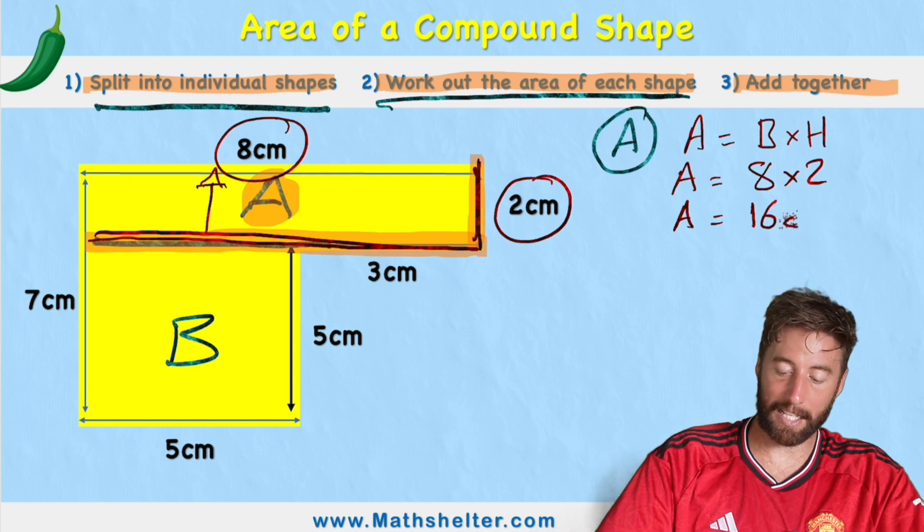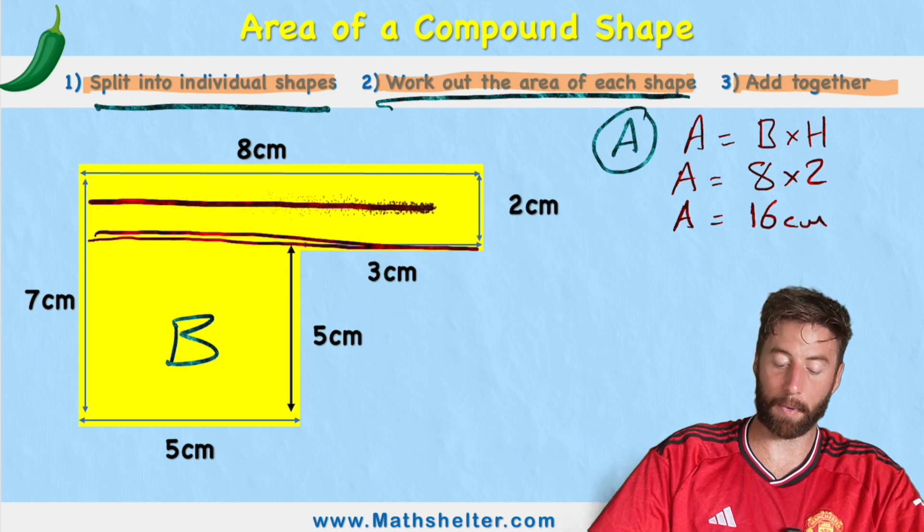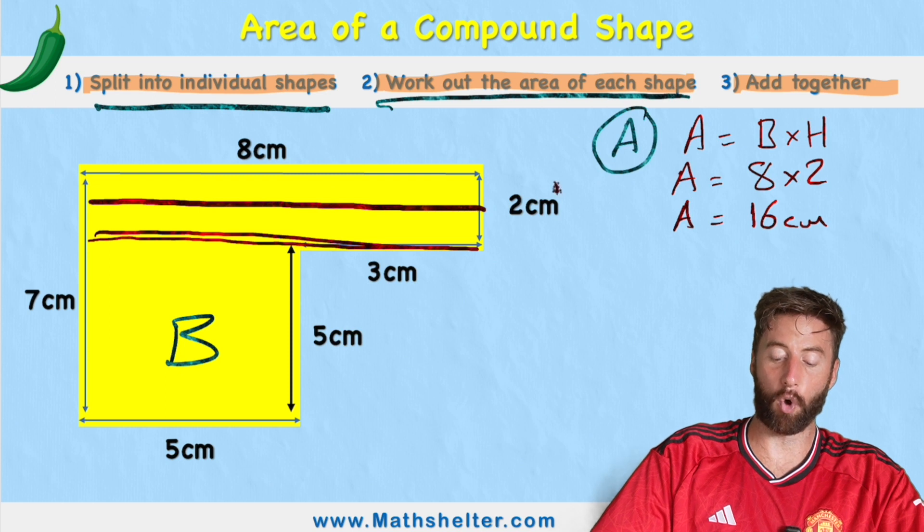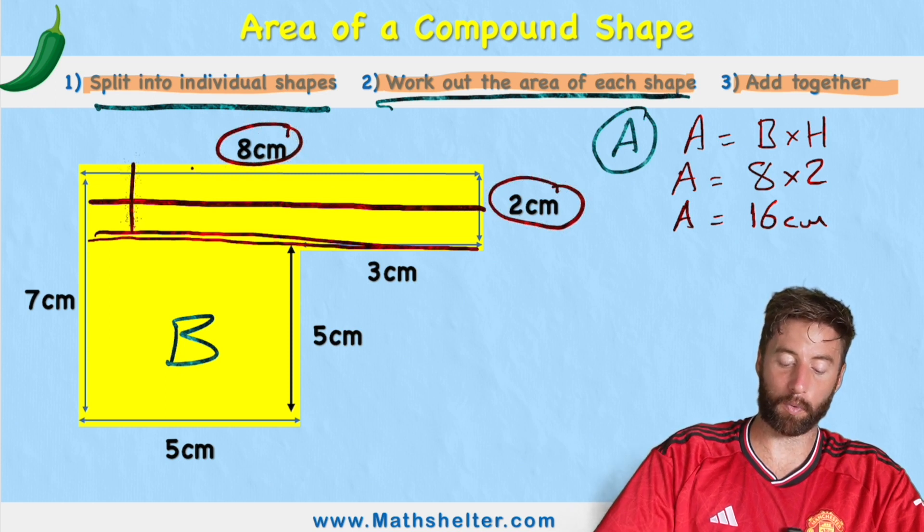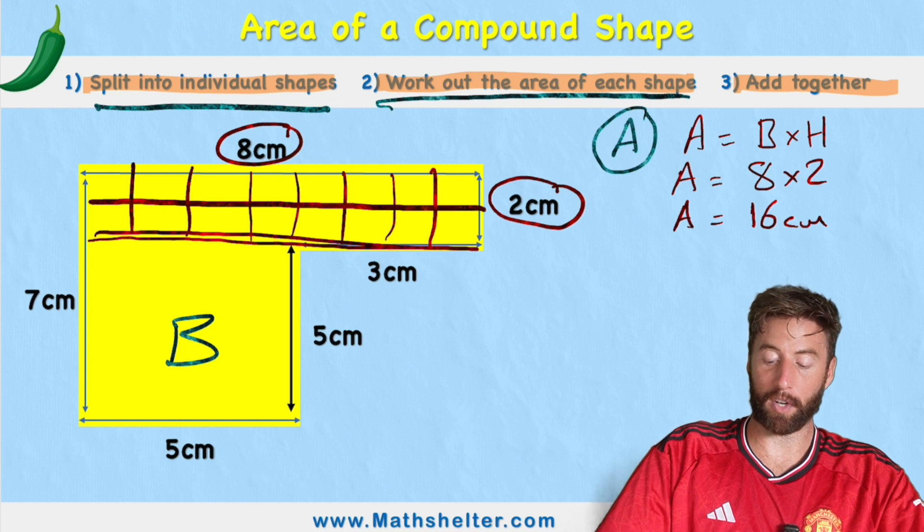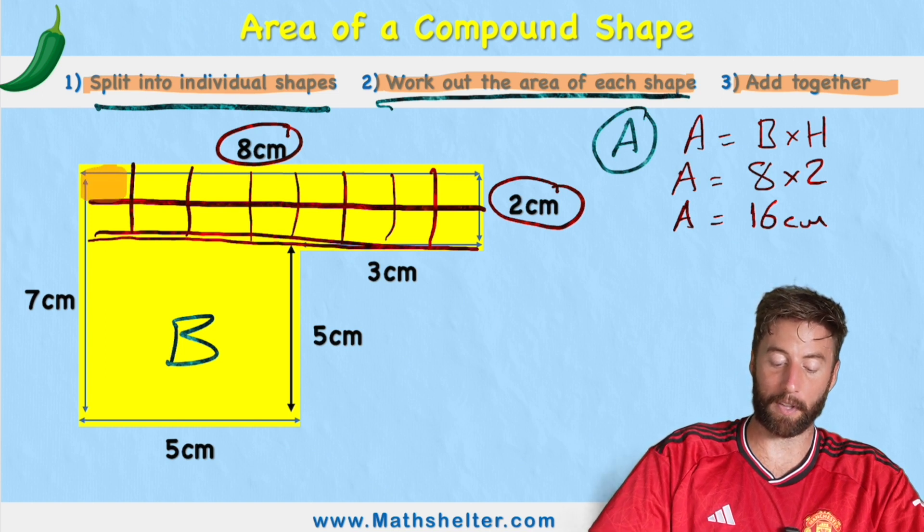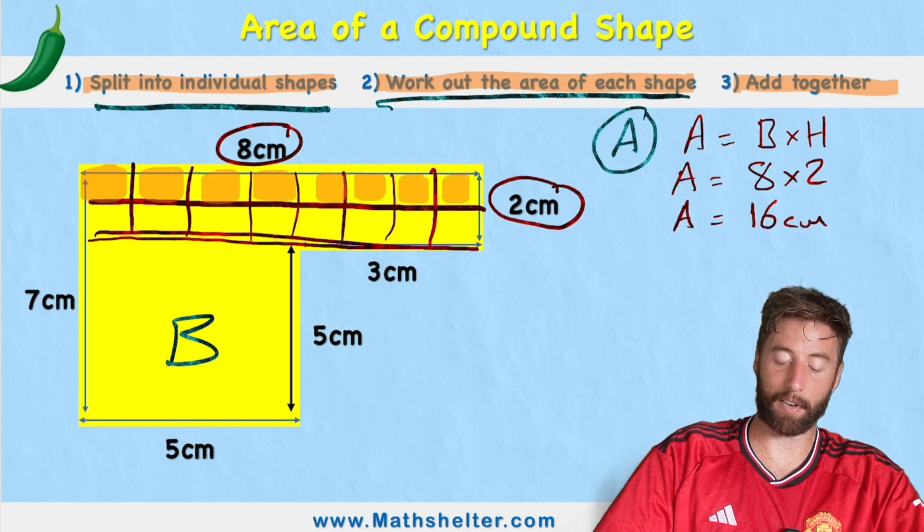No 16 centimeters and what we need to understand is we've effectively cut this shape into 2 rows because we have 2 centimeters and 8 columns 1, 2, 3, 4, 5, 6, 7 and 8 and what we've done to measure it is we've just counted how many of these square centimeters we have. So 1, 2, 3, 4, 5, 6, 7, 8, 9, 10, 11, 12, 13, 14, 15, 16.